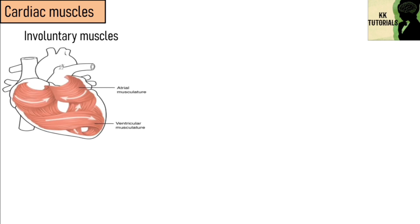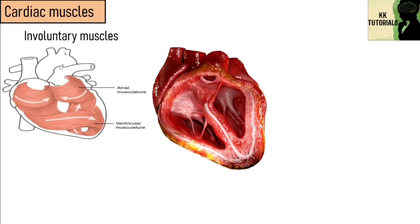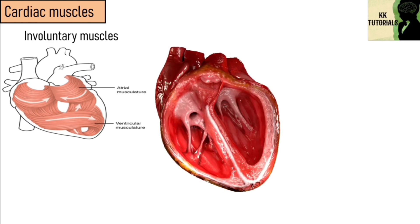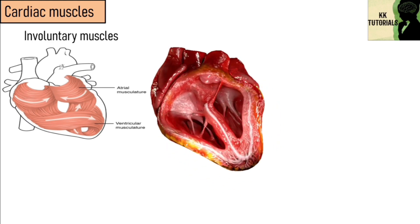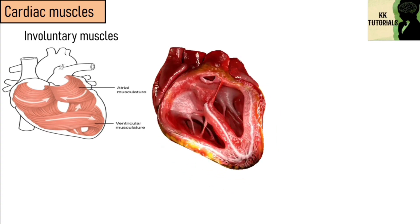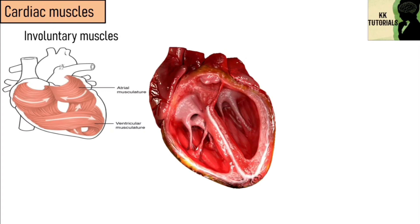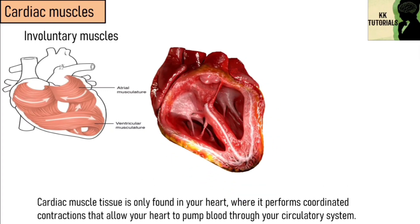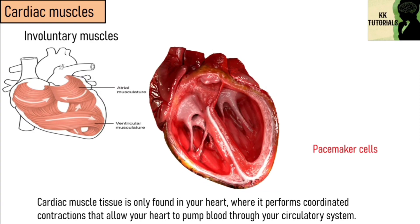Another type of muscle is cardiac muscle. These are also involuntary muscles and work to keep your heart pumping through involuntary movements — meaning they work automatically without you being aware of them, just like smooth muscles. Cardiac muscle tissue is only found in your heart, where it performs coordinated contractions that allow your heart to pump blood through your circulatory system.